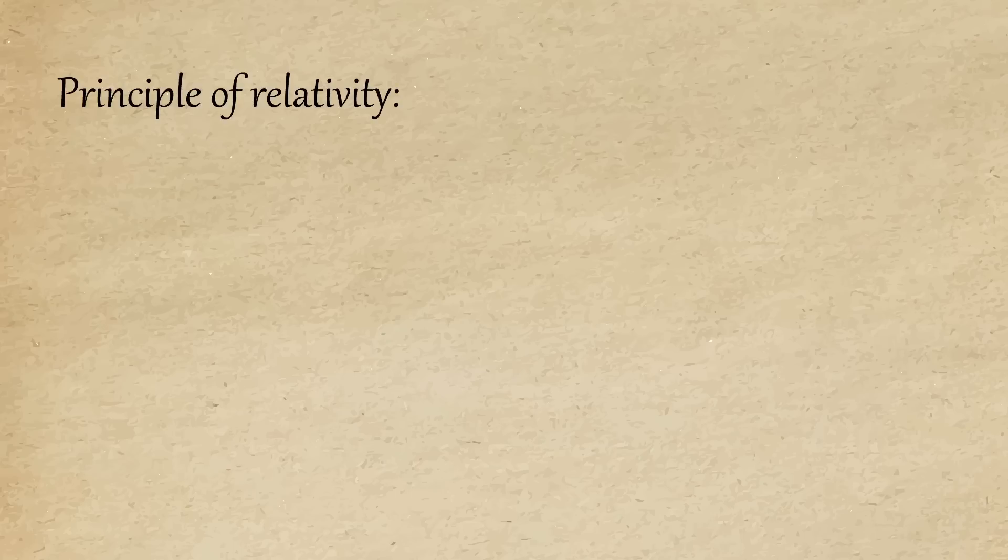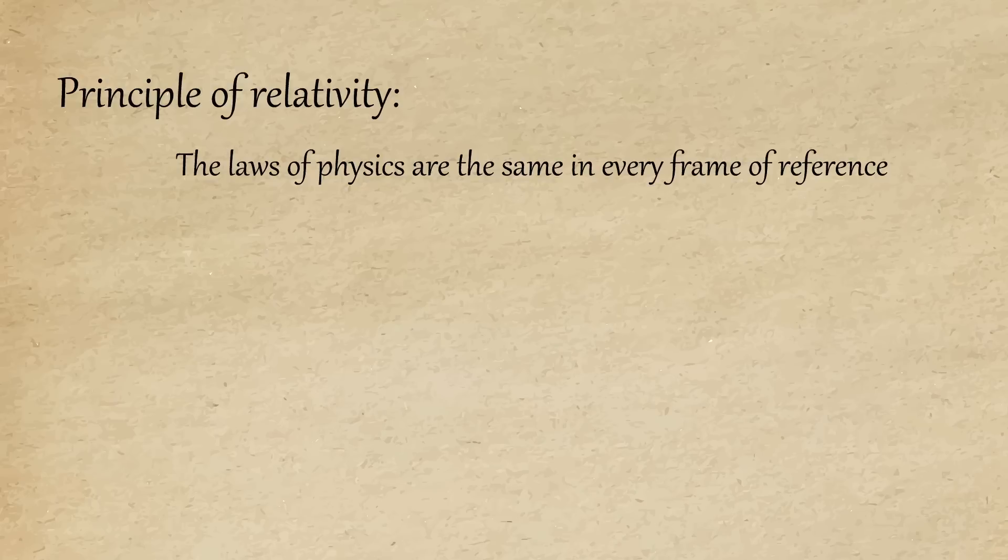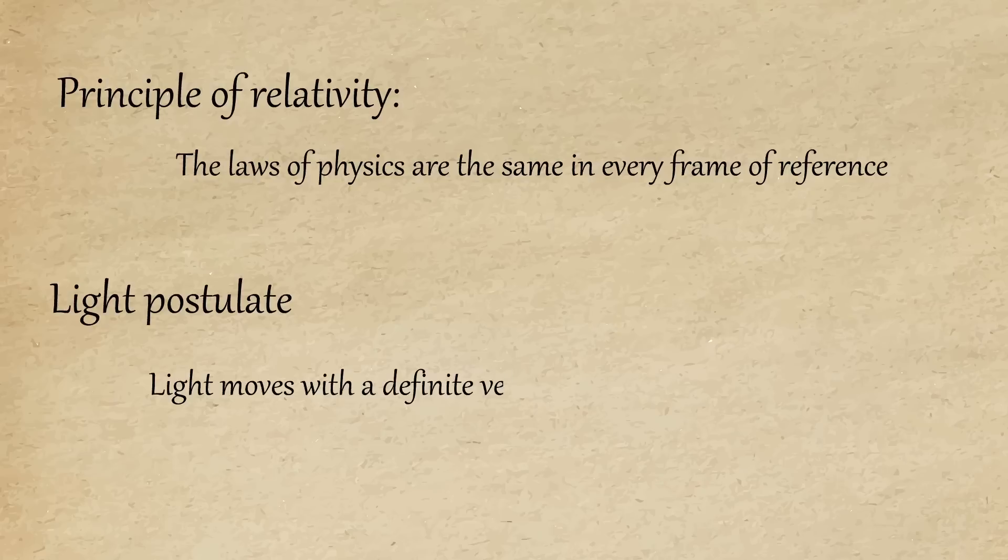But if you want to disprove special relativity, you have to disprove one of its postulates. Special relativity has two postulates. The relativity principle postulate and the light postulate, which tells you that the speed of light is independent of the relative motion of the source.